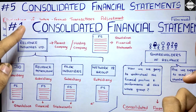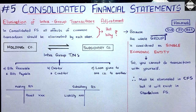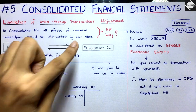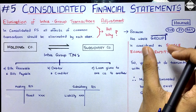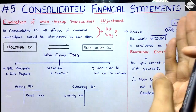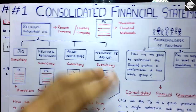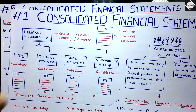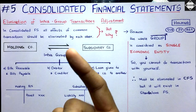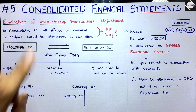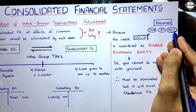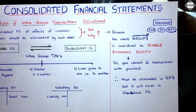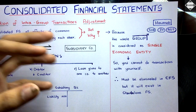But when it comes to consolidated financial statements, the same thing will not work. In consolidated financial statements, all effects of common intra-group transactions should be eliminated. Why? Because in consolidation we are combining all the financial statements of all the companies. This whole combined entity is called one single economic entity — the Reliance Industries Group. A single economic entity cannot do transactions with itself; it cannot trade with itself.